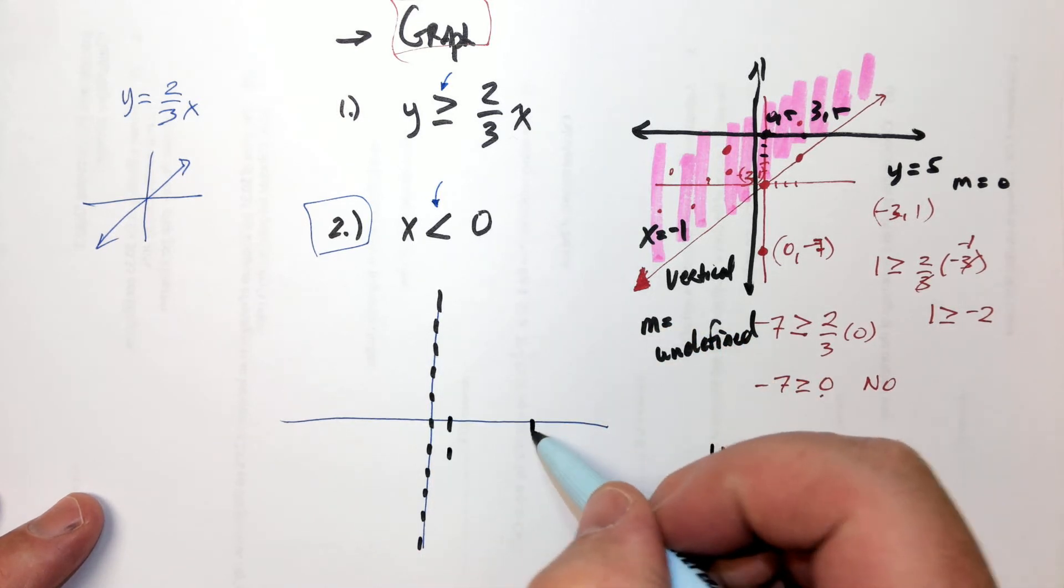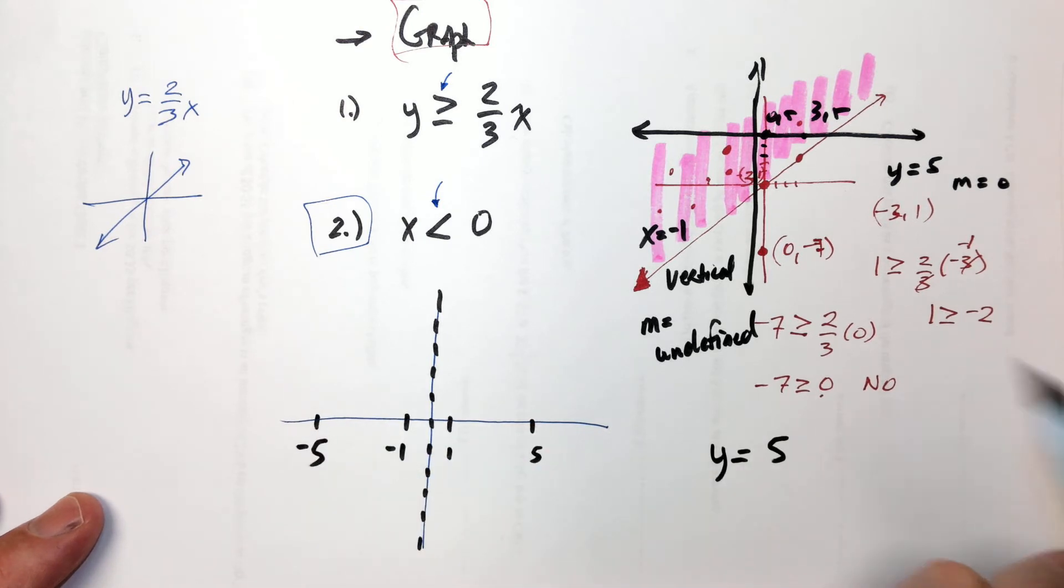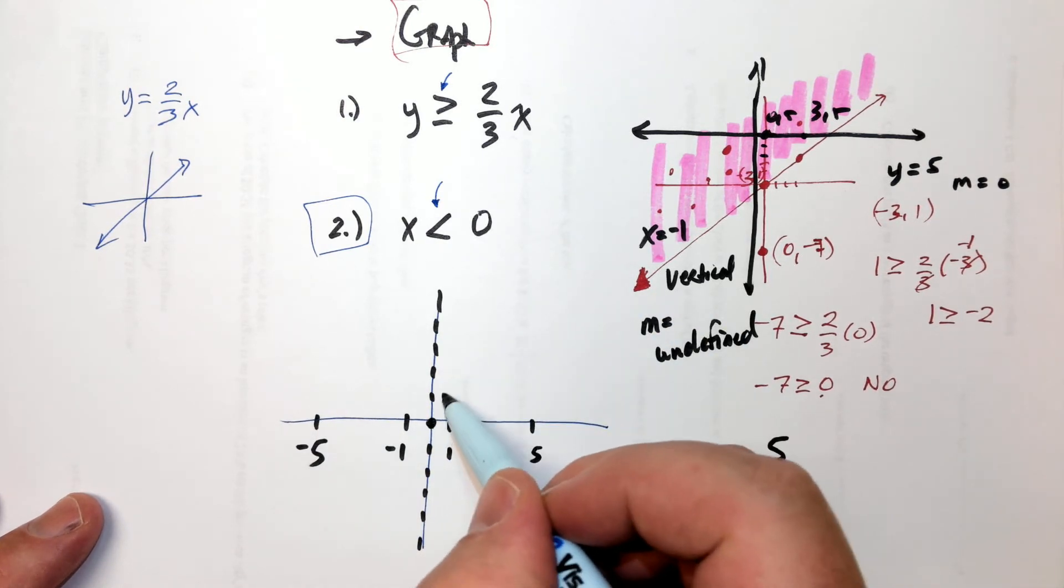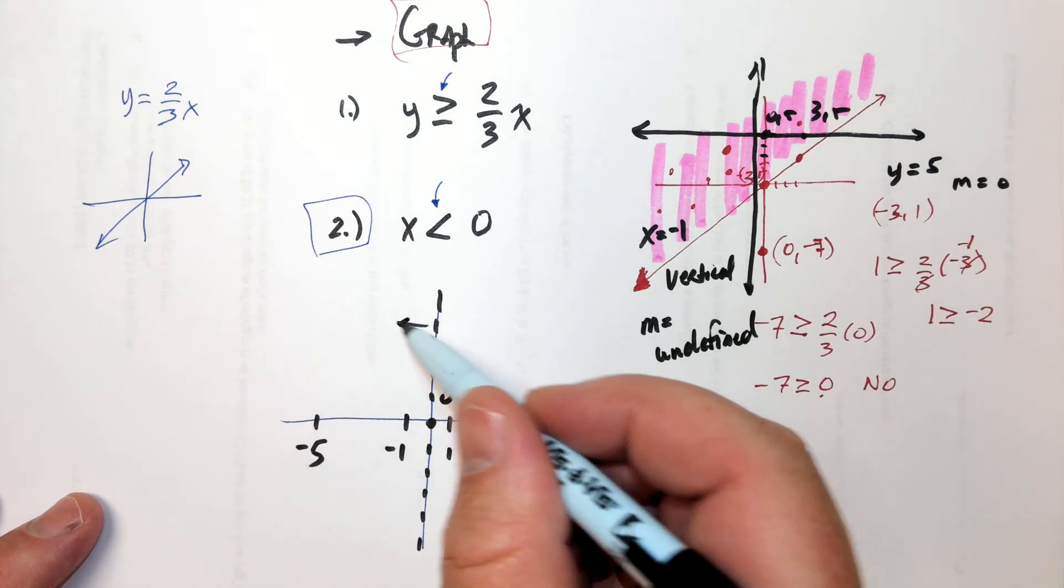And here x is equal to five. Here x is negative one, and here x is negative five. X has to be smaller than zero, which is right there. So it's this way. So it's all that way.